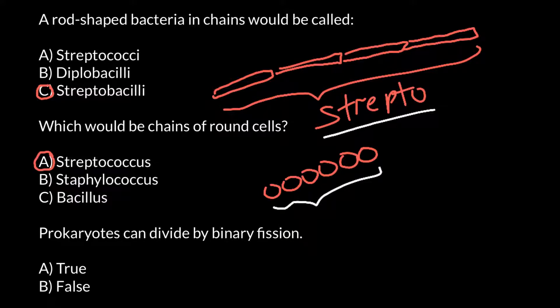And the last question: prokaryotes can divide by binary fission, and this is true. So normally bacteria would grow in size and then divide in the middle, and the mother cell would produce two daughter cells.